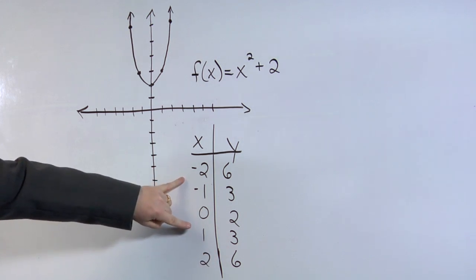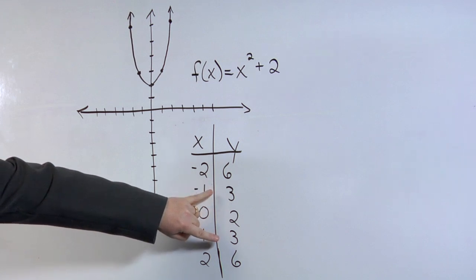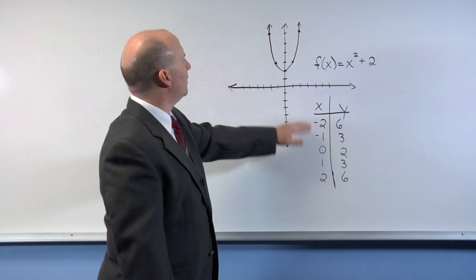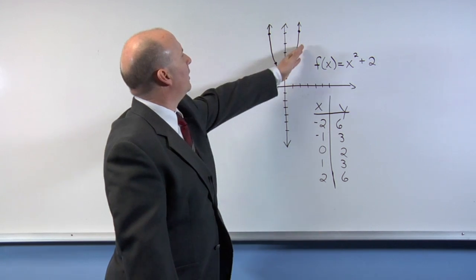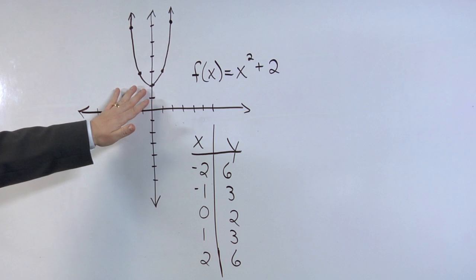Now, the collection of x values is called the domain, and the collection of the y values is called the range. When I graph these points, I create a parabola which is opening upward. And notice the vertex of the parabola is at the point 0, 2.